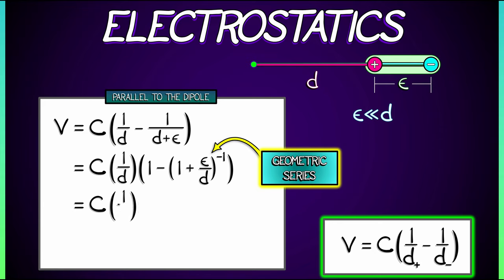So our potential is C times one over D times one minus quantity one minus epsilon over D. And then you got plus epsilon squared over D squared, et cetera, et cetera. But we're going to ignore those higher order terms. The ones cancel. We're left with V equals C times epsilon over D squared.